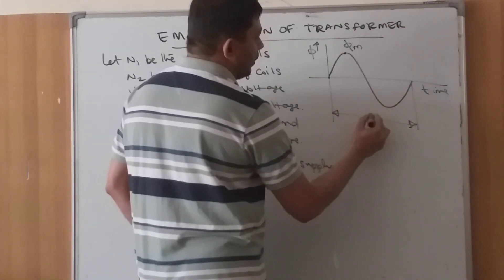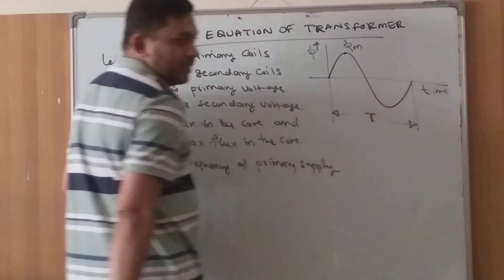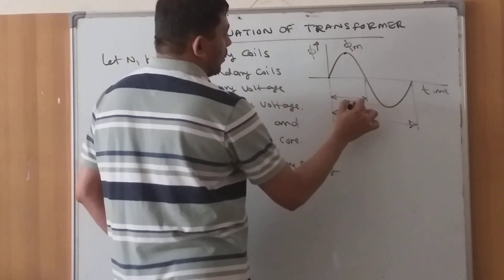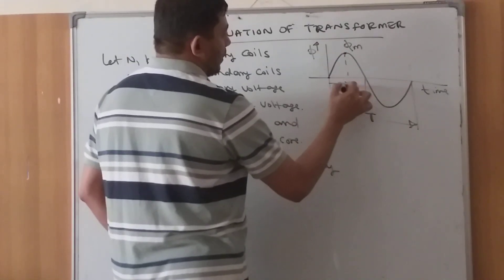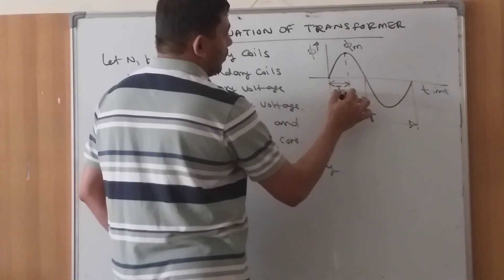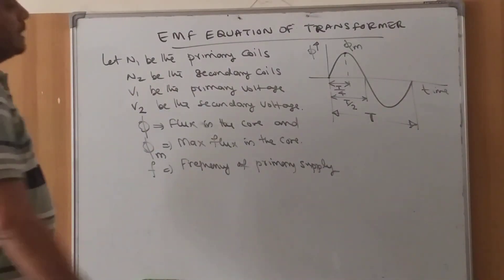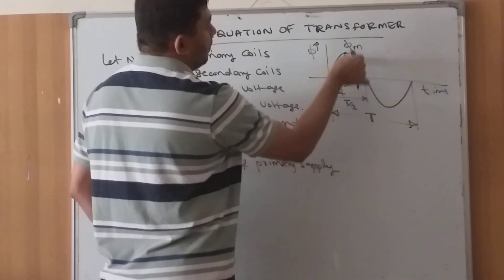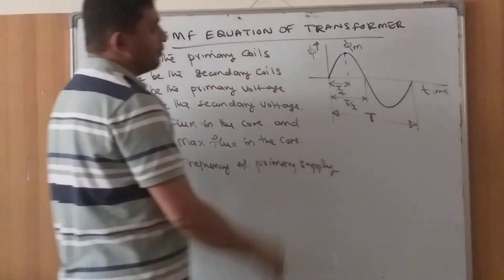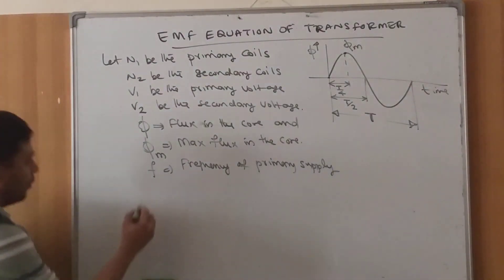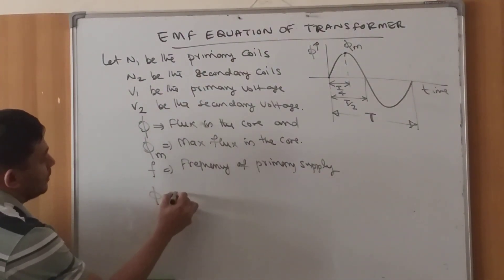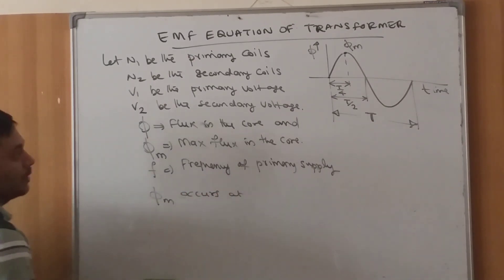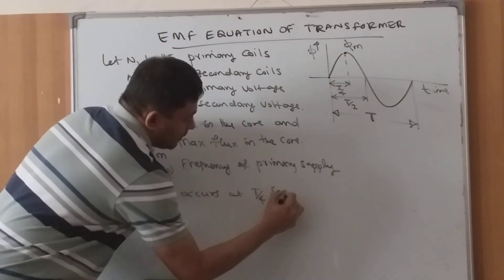The total time period of one cycle is T. Half the period is T/2, and a quarter period is T/4. At the instant T/4, the flux reaches its maximum value Phi_M. So we can say that Phi_M occurs at T/4 seconds.